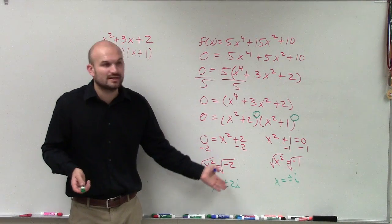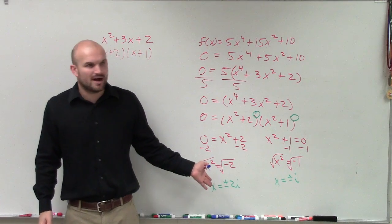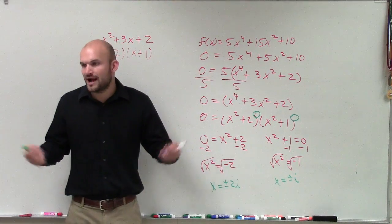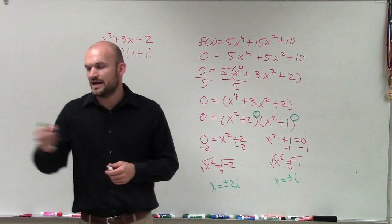However, the multiplicity, these are imaginary zeros, right? So the graph, those aren't actual zeros of the graph. So it's not going to cross or touch the x-intercept.